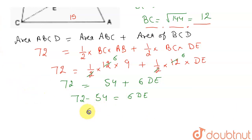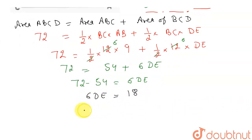So I can write this 6 DE to be equal to 72 minus 54 which will be 18. So the length of this DE will become 18 by 6 which will be 3 and units are in centimeters. So this will be 3 centimeters. So this is the solution of this question. Hope you understand, thank you.